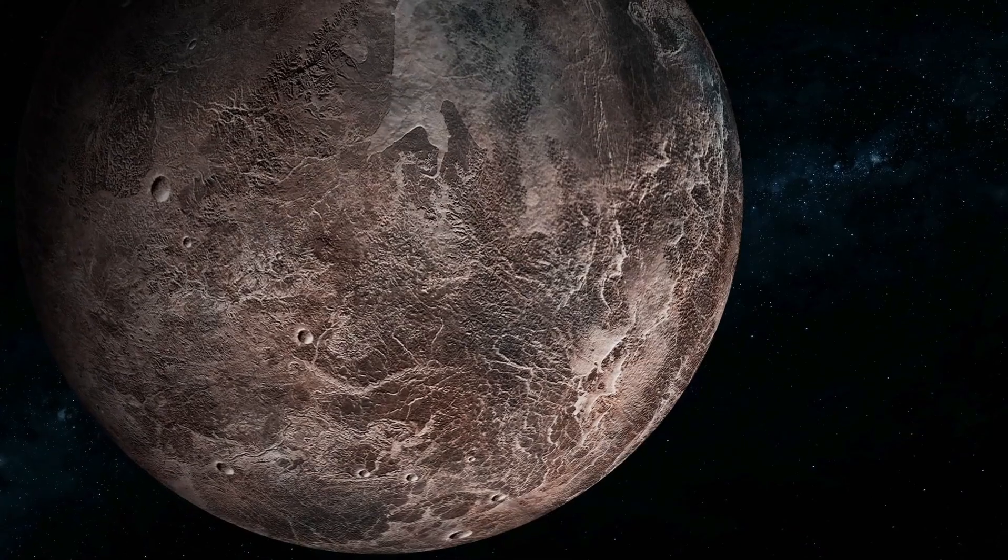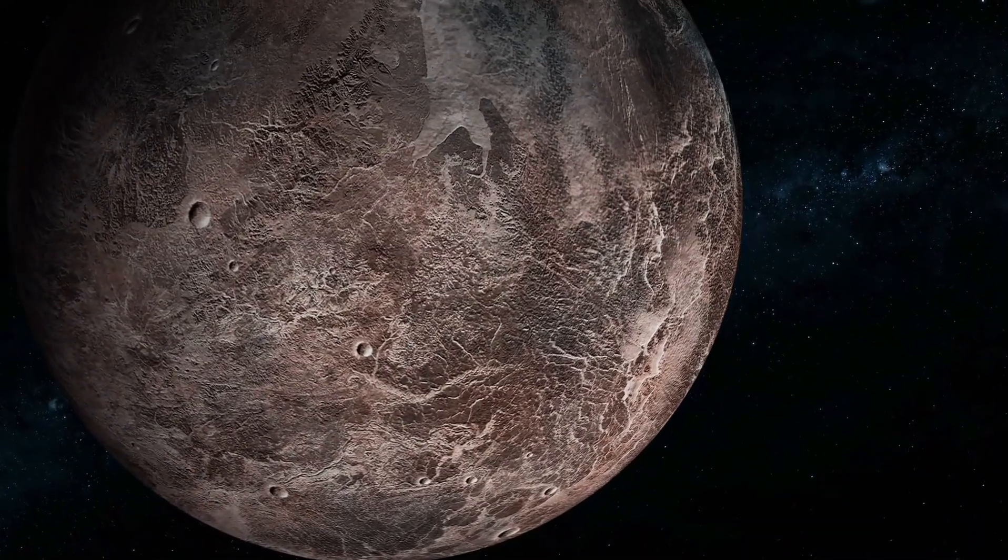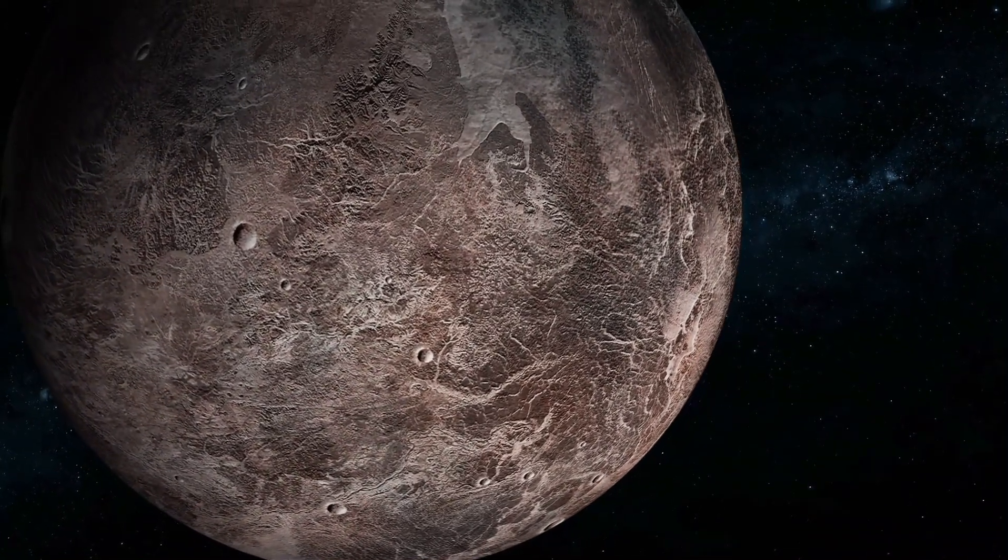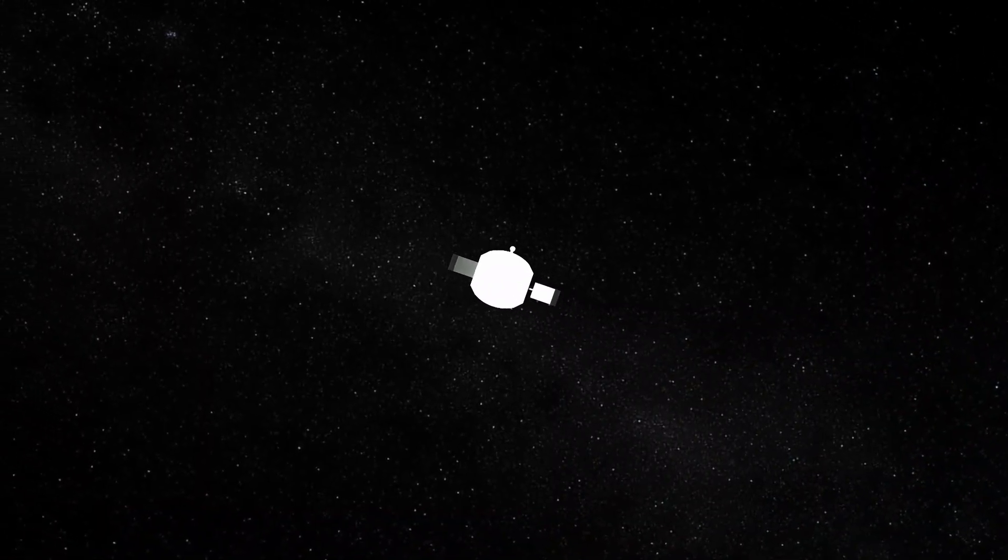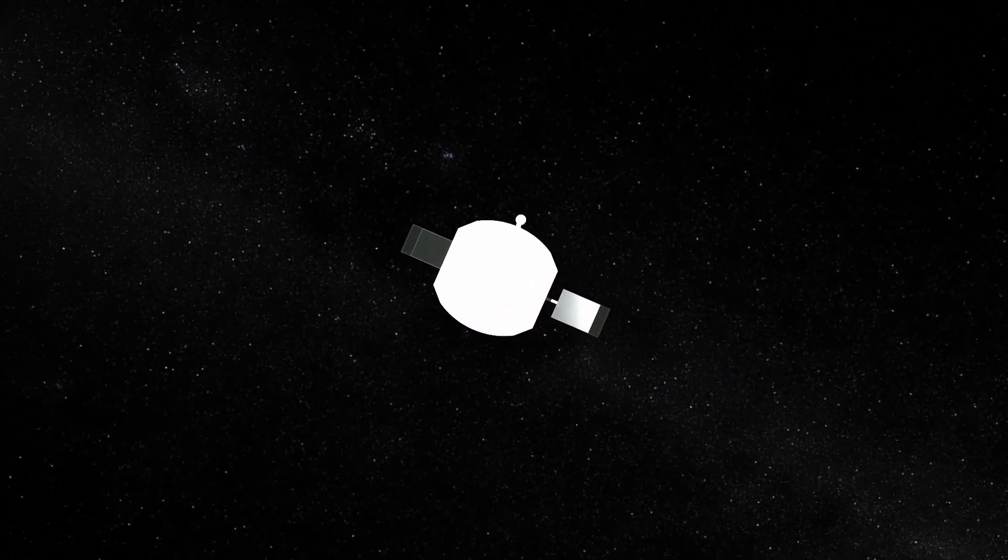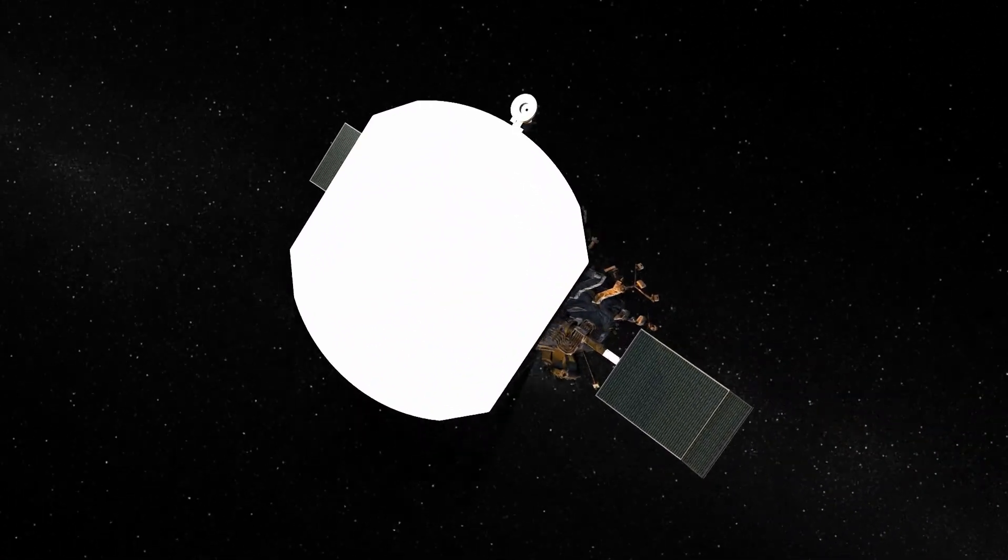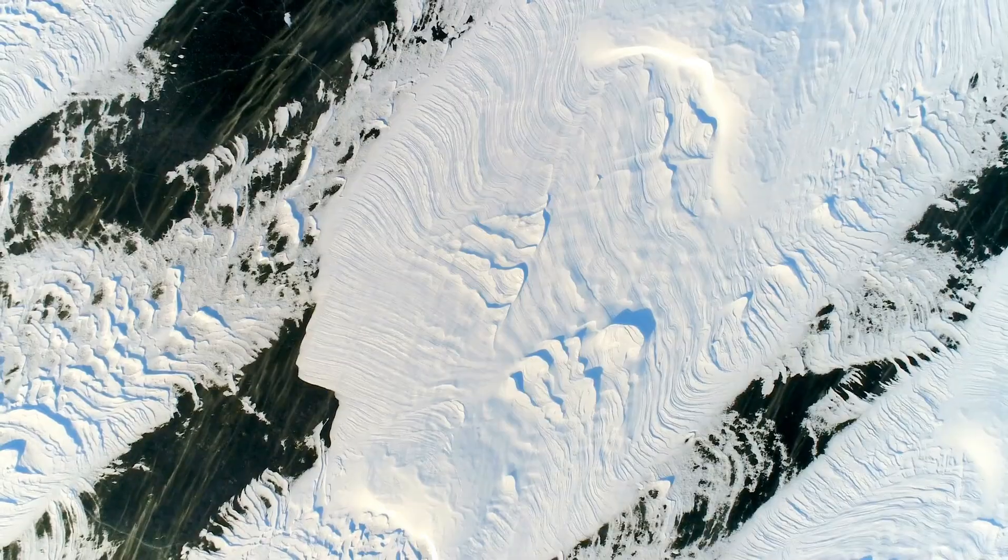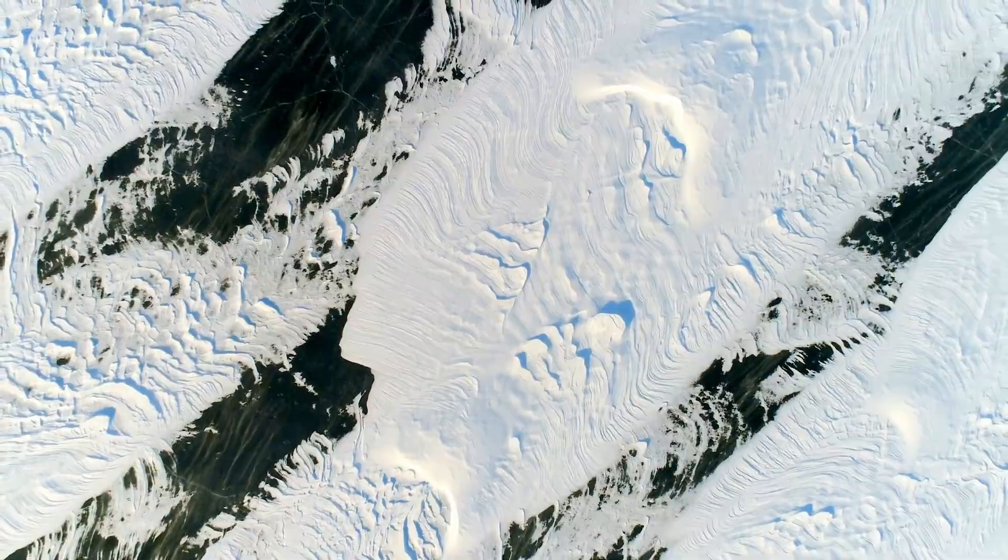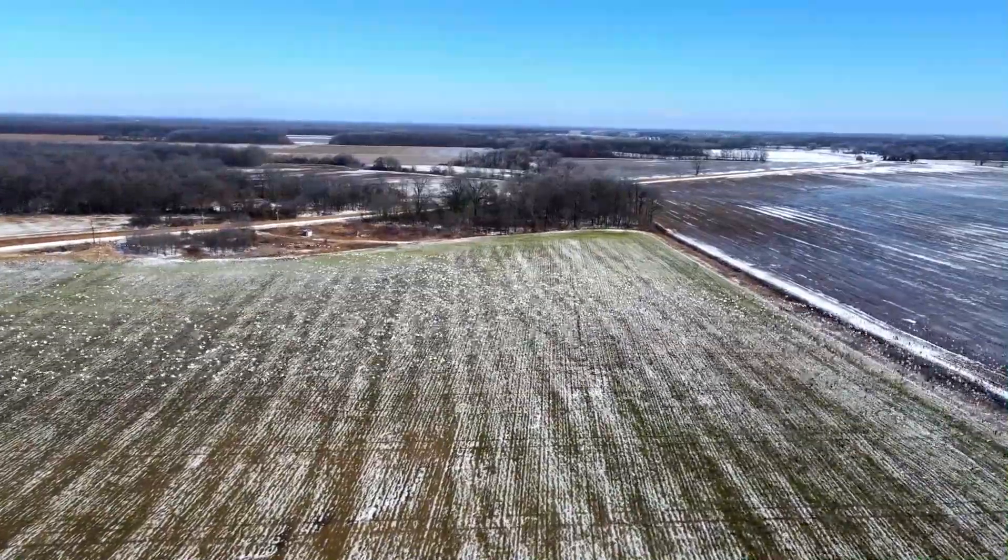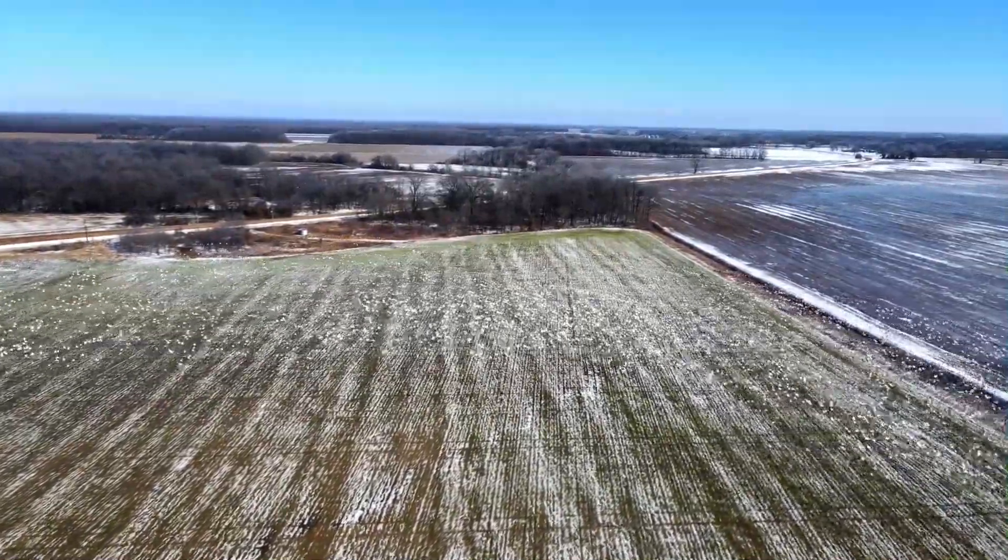Pluto, once considered the ninth planet, gained renewed attention with the New Horizons mission in 2015. The spacecraft revealed a world of surprising complexity, with towering mountains of water ice, smooth plains of frozen nitrogen, and an atmosphere that creates hazy twilight skies. Pluto's heart-shaped Tombaugh Regio has become an iconic symbol of this dwarf planet's unexpected charm.